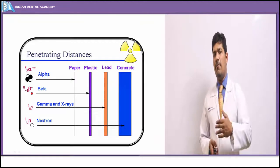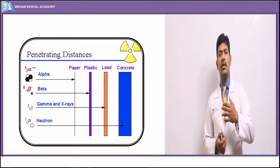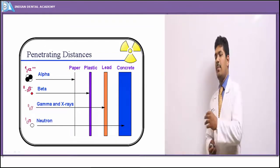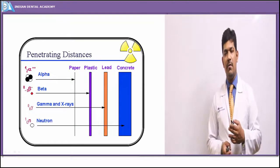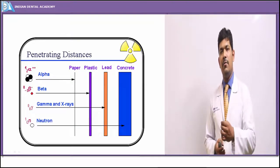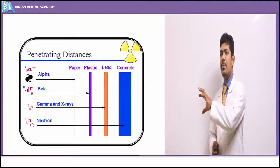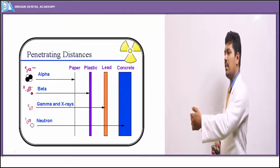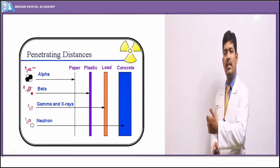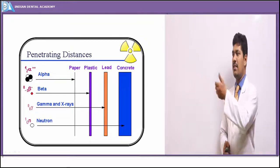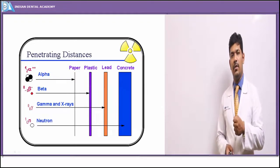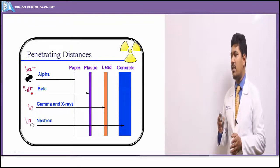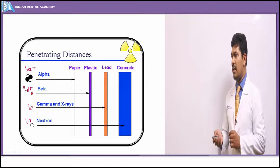Depending on the weight of these particles, the penetrating power is inversely proportional. The heavier the particle, the less the penetrating power. Alpha particles are the heaviest and have the least penetrating power, while neutrons have the lightest mass and greater penetrating power, as shown in the schematic diagram.